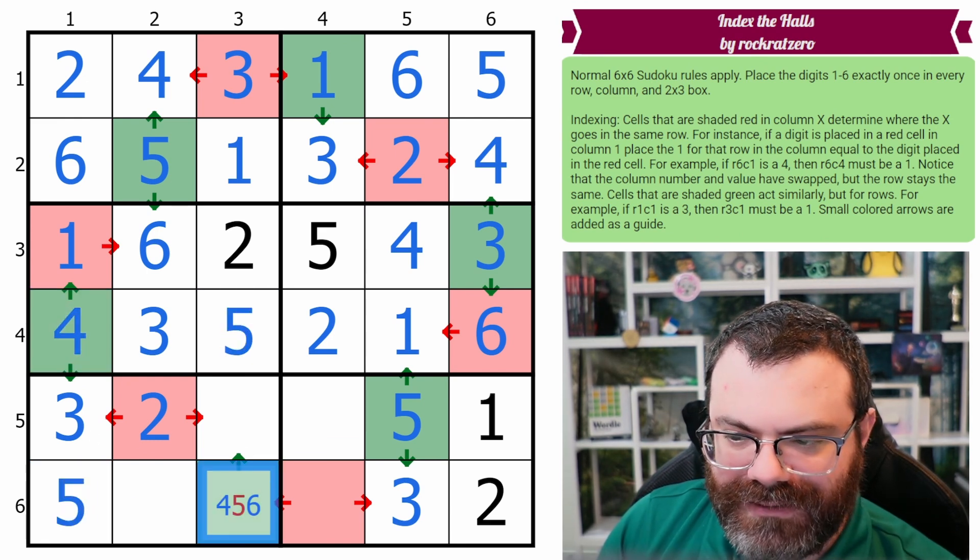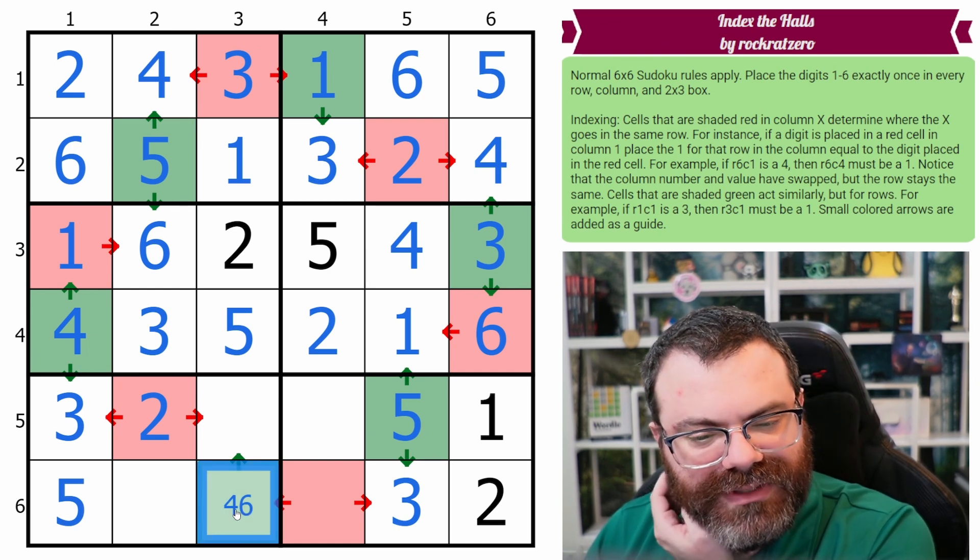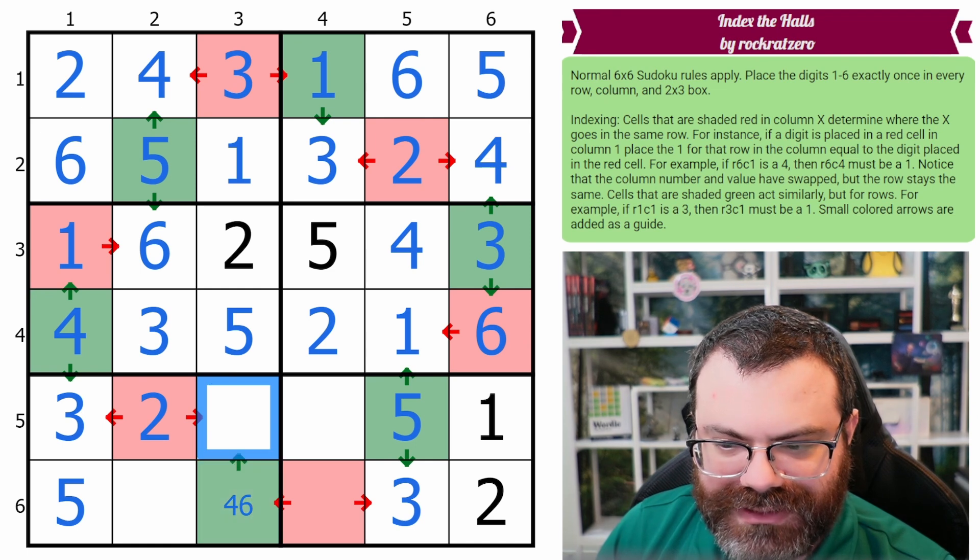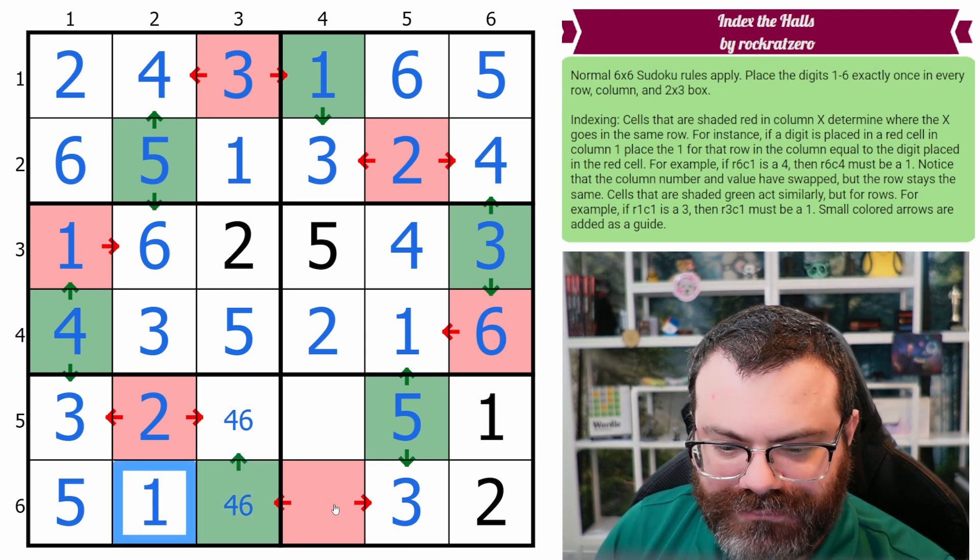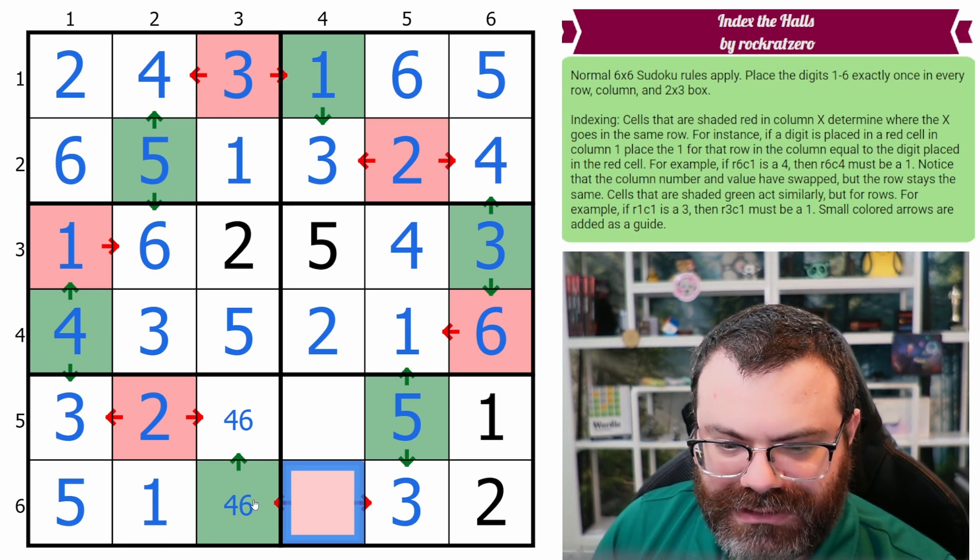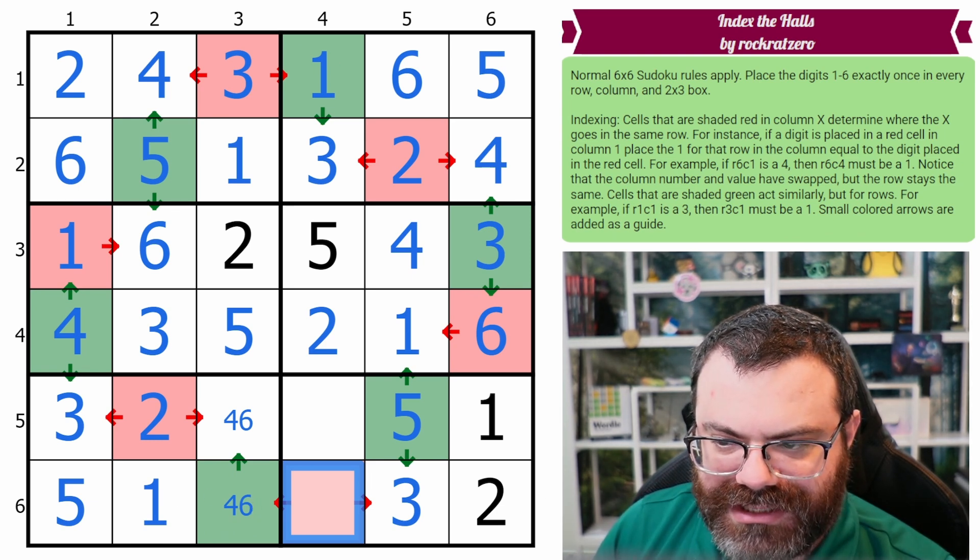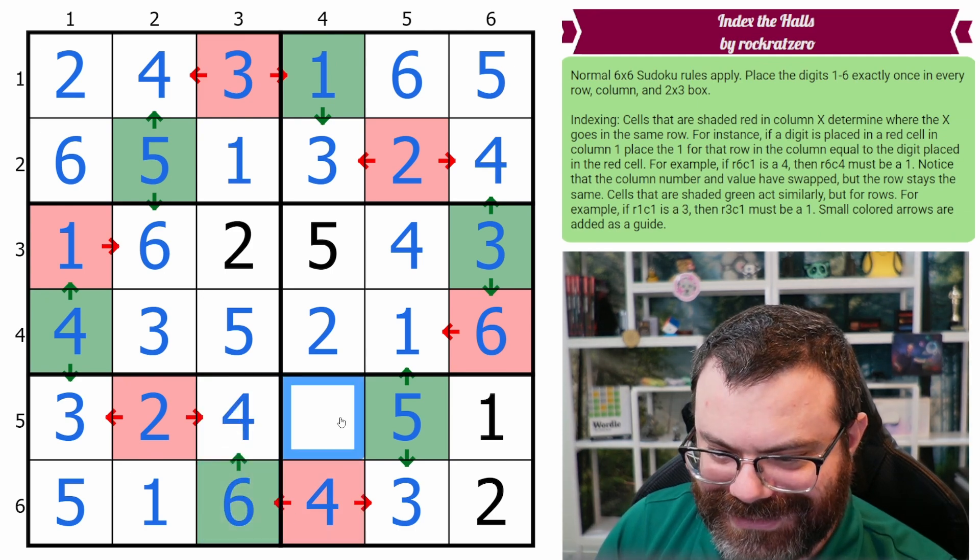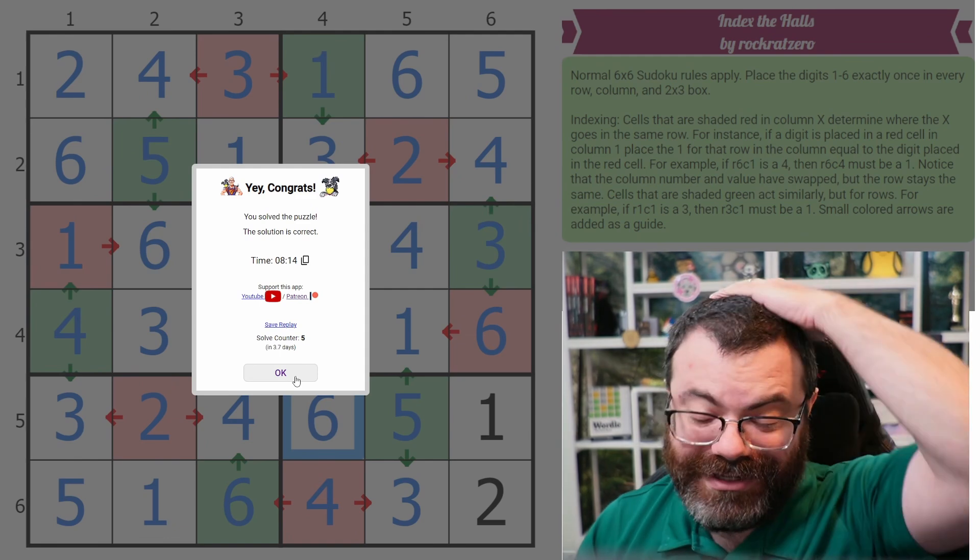So this is telling us where the 6 goes. One of those two. In fact, this is a 4, 6 pair. So this is a 1. This is telling us where the 4 goes. It can't be 3, so it has to be a self-referenced 4. This is now a self-referenced 6. And that's a 6. And we're done with the correct solution.